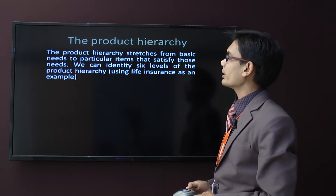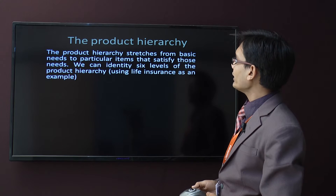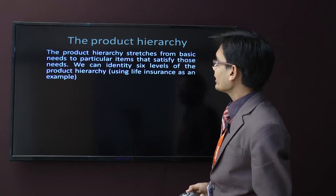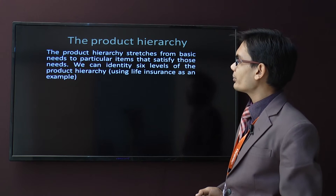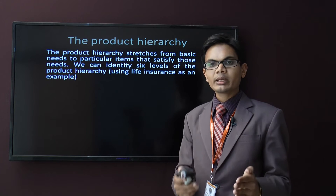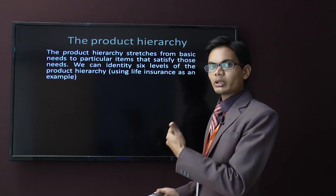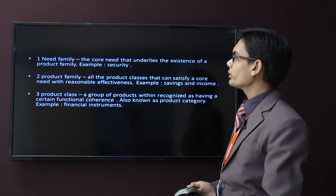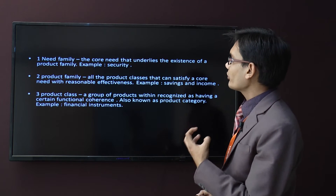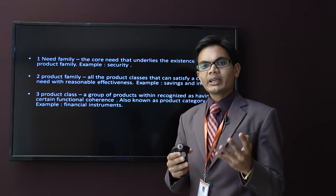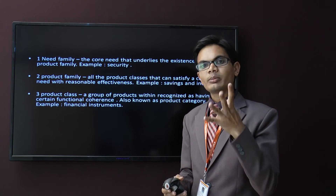Now, the product hierarchy. The product hierarchy stretches from a basic need to the particular item that satisfies those needs. We can identify six levels of the product hierarchy using life insurance as an example. The first level is need family — the core need that underlies the existence of a product family. For example, security — I need a secure future, that's why I am looking for insurance.